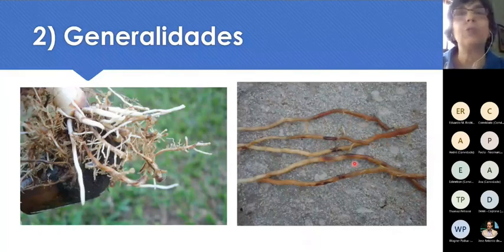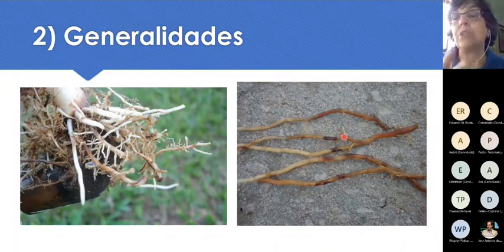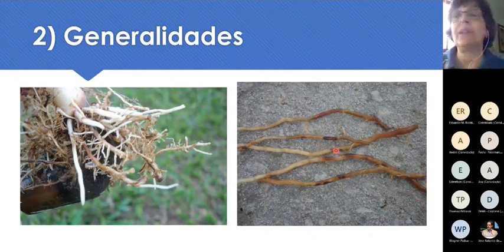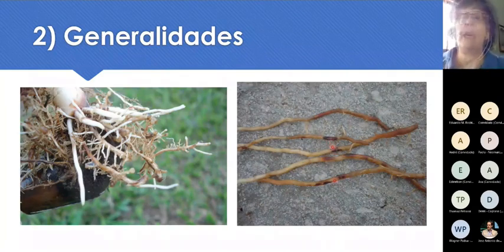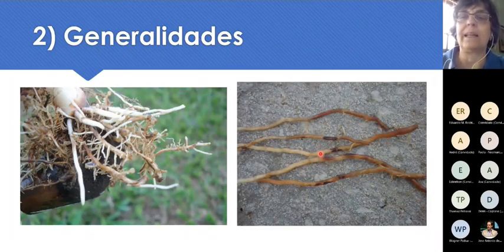Pratylenchus, por outro lado, não causa galhas, ele causa necroses nas raízes. Da mesma forma, não é possível arrancar uma touceira de cana, olhar as raízes, ver essas necroses e afirmar que se trata de Pratylenchus. Por quê? Porque tem outras coisas — por exemplo, cigarrinha das raízes, quando se alimenta nas raízes, causa um sintoma bem parecido. Então, se quisermos ter certeza da ocorrência de nematóides numa área, precisamos coletar uma amostra e mandar analisar.